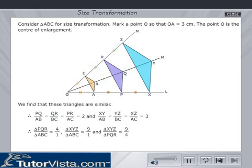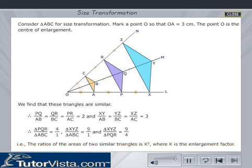Therefore, triangle PQR by triangle ABC is equal to 4 by 1. Triangle XYZ by triangle ABC is equal to 9 by 1. And triangle XYZ by triangle PQR is equal to 9 by 4. That is, the ratios of the areas of two similar triangles is K square, where K is the enlargement factor.